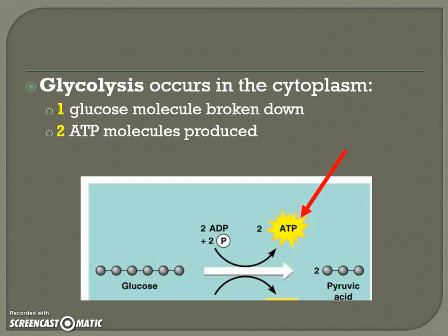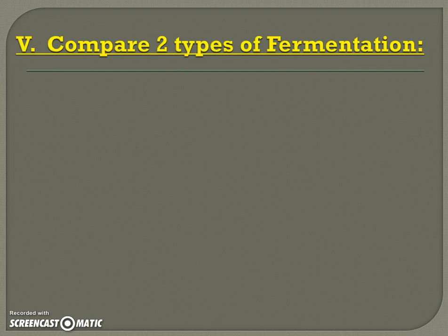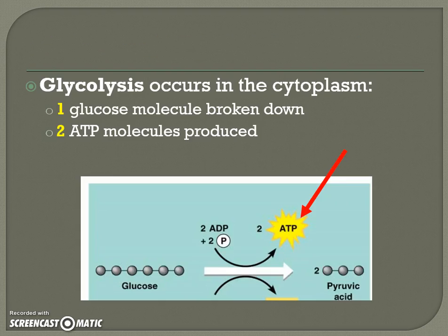Glycolysis occurs in the cytoplasm actually, not even yet in the mitochondria. This process will take that one glucose molecule and break it in half. How many ATP do we get? Only two — that's kinda lame, only two ATP. That's not very much. In reality, for anaerobic or fermentation, that's all that pretty much happens to make ATP. So how many ATP did we make total? Only two.